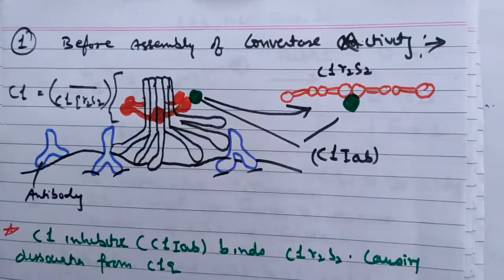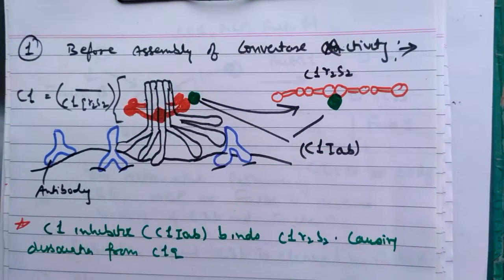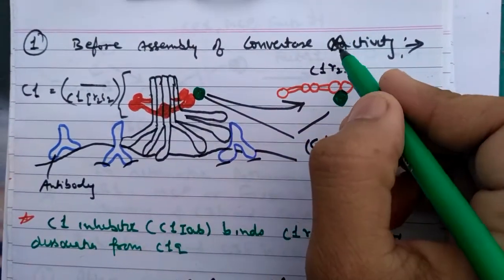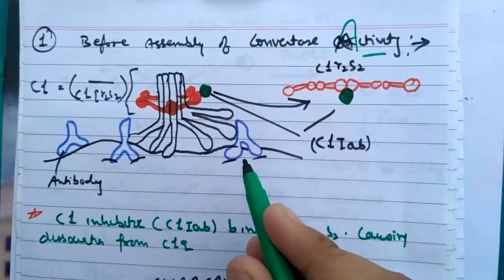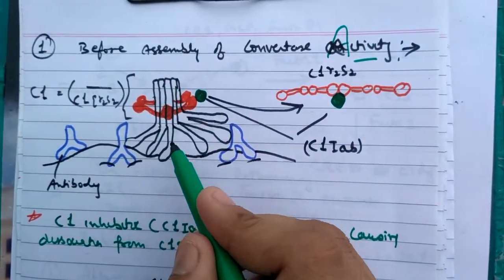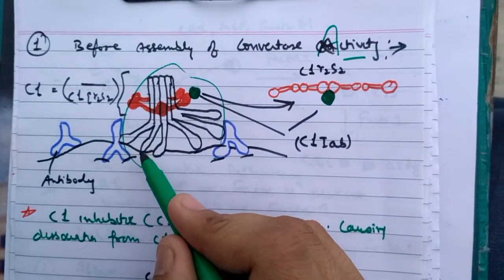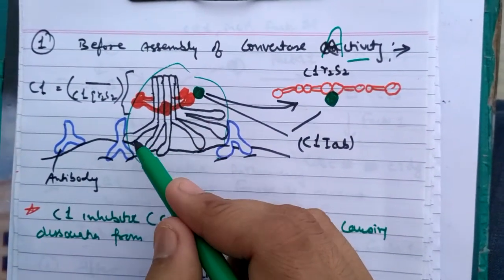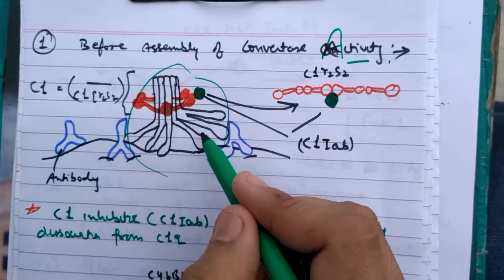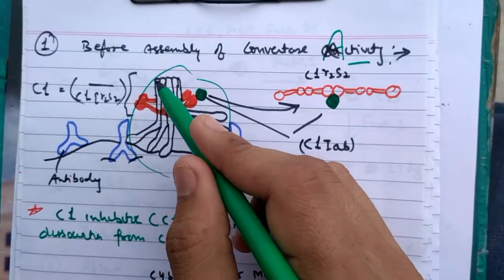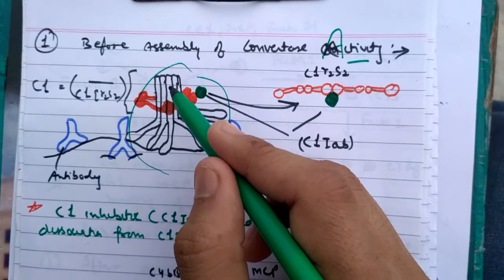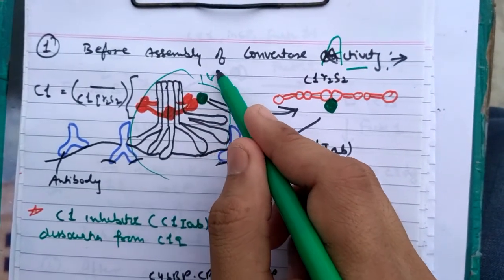First is before assembly of convertase activity. Here is the C1 complex, you can easily see it has six head forms of the six collagen-like helical formed by 18 polypeptide chains.